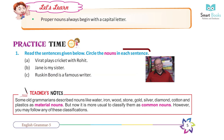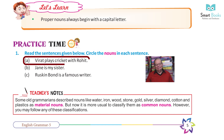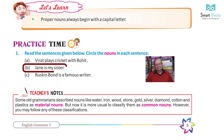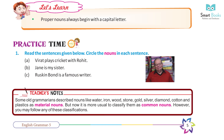Practice time. Question 1: Read the sentences given below and circle the nouns in each sentence. A) Virat plays cricket with Rohit. Answer: circle Virat, cricket, Rohit. B) Jane is my sister. Answer: circle Jane and sister. C) Ruskin Bond is a famous writer. Answer: circle Ruskin Bond, writer.